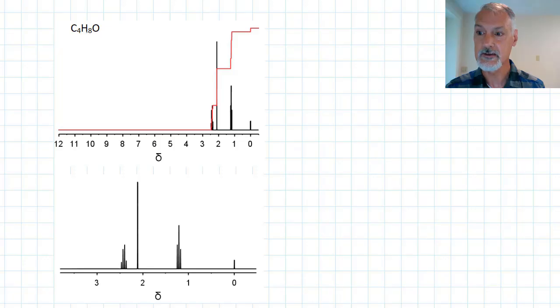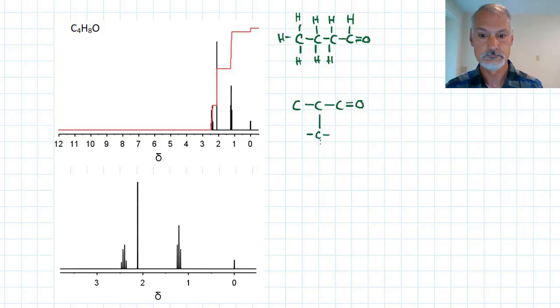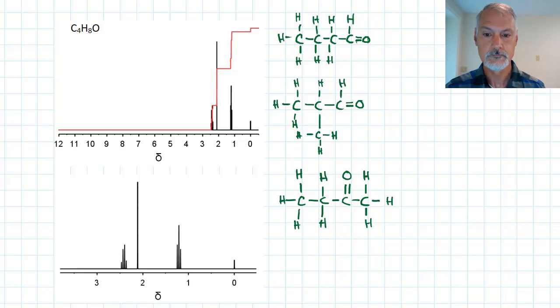Well, first of all, I can recognize that it's not a saturated compound, because if it was saturated, there would be 10 hydrogens. So, there's probably a double bonded oxygen in this. So, with that in mind, one possibility might be an aldehyde. I could perhaps get an isomer of this aldehyde. And I could also get a ketone.